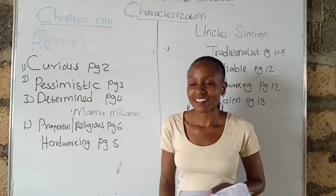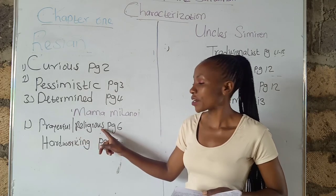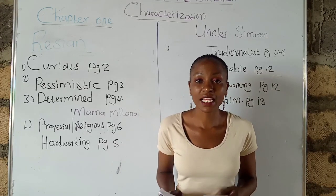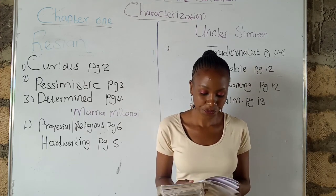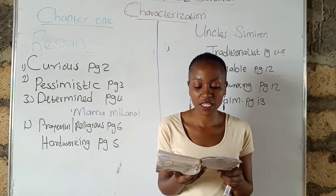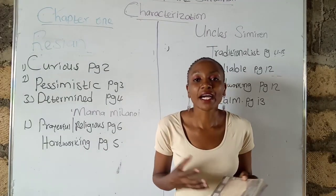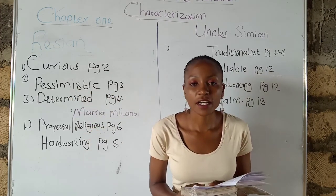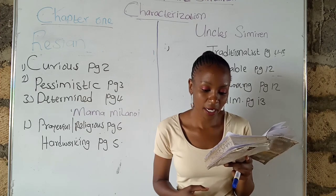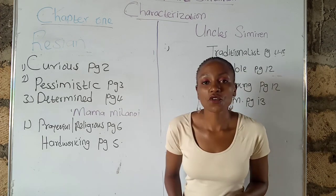Next is Mama Milanoi, the mother to Resian and Tayo, and wife to Ole Kyalo. First, she is prayerful or religious. Before they started their journey, Mama Milanoi led them in prayer. That is on page six: 'Mama Milanoi's voice wavered a little — let's pray that the good Lord give us journey mercies,' and she prayed. She was also hardworking — busy packing while Resian and Tayo were at the window watching. Page five, third paragraph: 'What on earth are you doing there at the window instead of helping me pack?' their mother asked sharply.